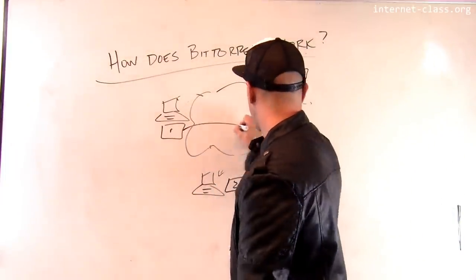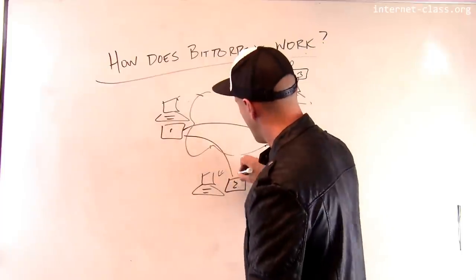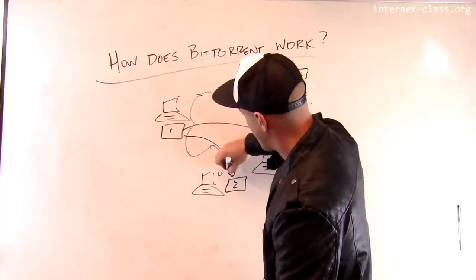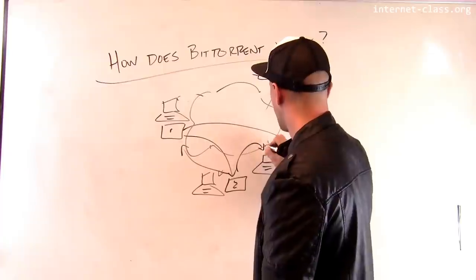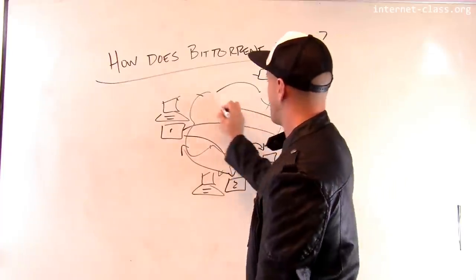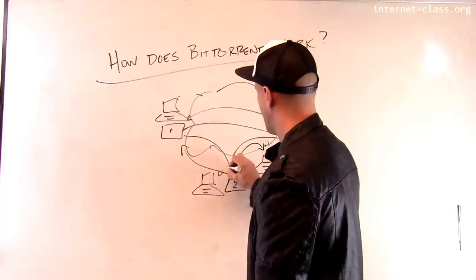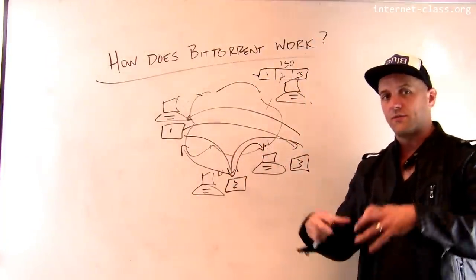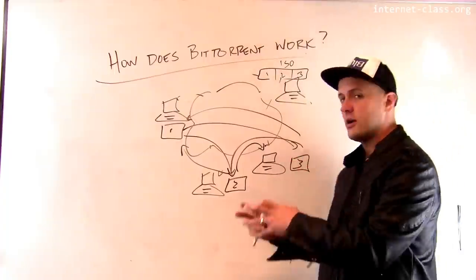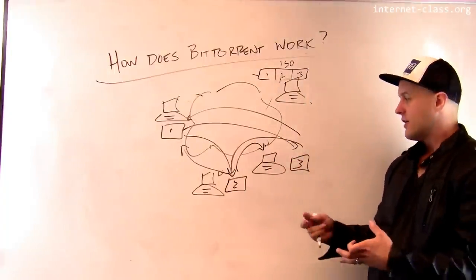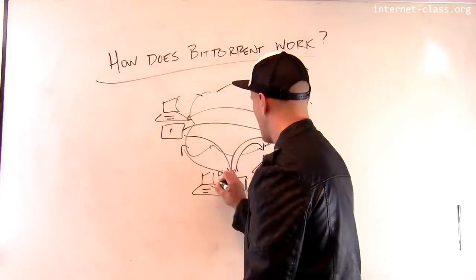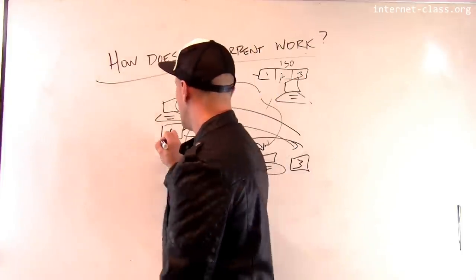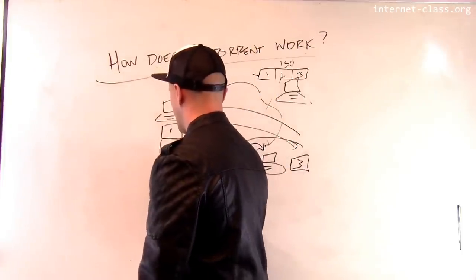So this guy is going to send a copy of piece one here and here. This guy is going to send a copy of piece two here and here. And this guy is going to send a copy of piece three here and here. And this ends up looking fairly complicated. We've sort of created this fully connected graph of these nodes exchanging the parts of the file so that at the end of the day, they have all of the parts of the file that they need and they can reconstruct the entire thing.